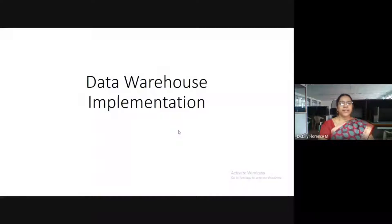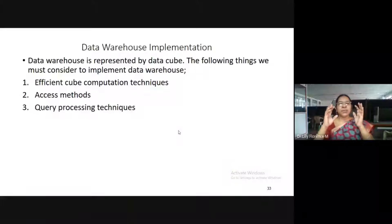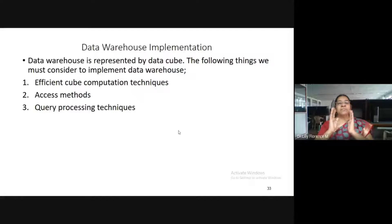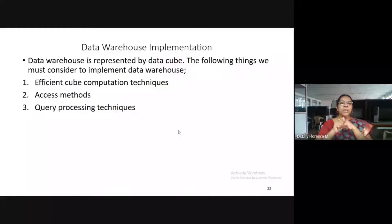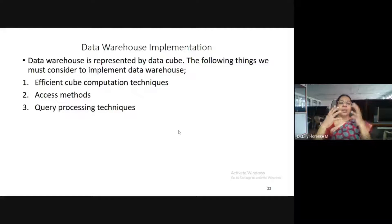Welcome to Florence Programming. In this video I am going to explain about data warehouse implementation. The model of data warehouse is the data cube, which consists of a set of cuboids, a fact table, and dimensions. There are three things we must consider to implement a data warehouse: efficient data cube computation, access methods, and query processing.